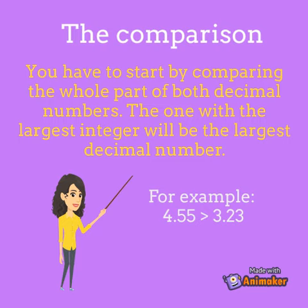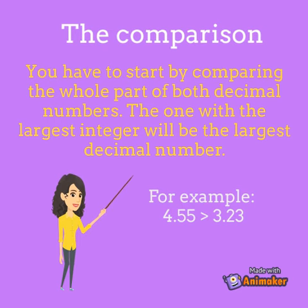The comparison. You have to start by comparing the whole part of both decimal numbers. The one with the largest integer will be the largest decimal number. For example, 4.55 is greater than 3.23, since 4 is greater than 3.